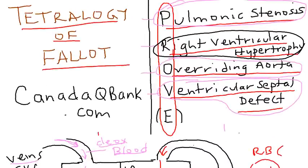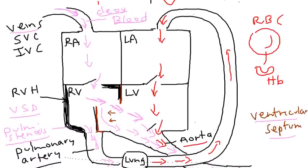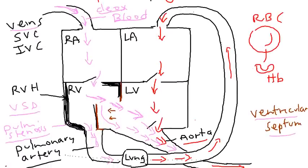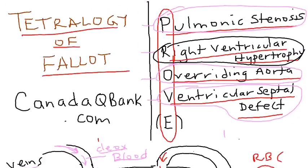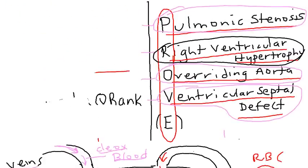I really hope I've explained that as clearly as possible. That is Tetralogy of Fallot — remember, it's just one problem: the ventricular septum deviating to the right. Now that we've drawn this diagram, we can get into the symptoms and all that.